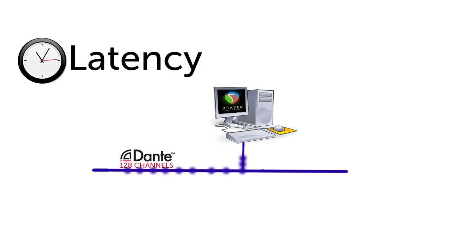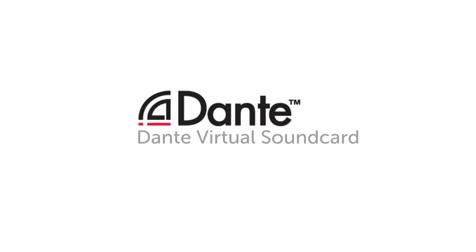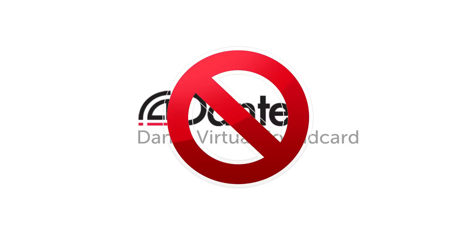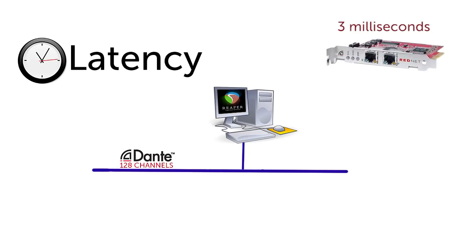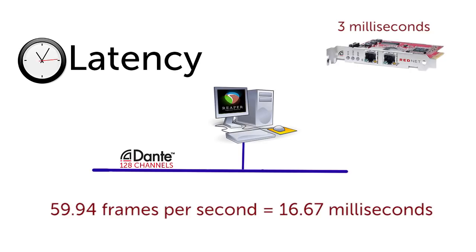Your biggest hurdle in this setup will be latency — the amount of time that passes from when your computer takes an audio signal in until it sends it back out. You'll want latency as low as possible so your audio doesn't get out of sync with your video. I recommend not relying on Dante Virtual Soundcard, which uses the computer's Ethernet port; this puts all processing on your CPU, forcing larger buffers to avoid dropouts. The Focusrite RedNet card only adds three milliseconds of total latency. We run video at 60 frames per second, so staying under 16 milliseconds means we won't even be a frame delayed.